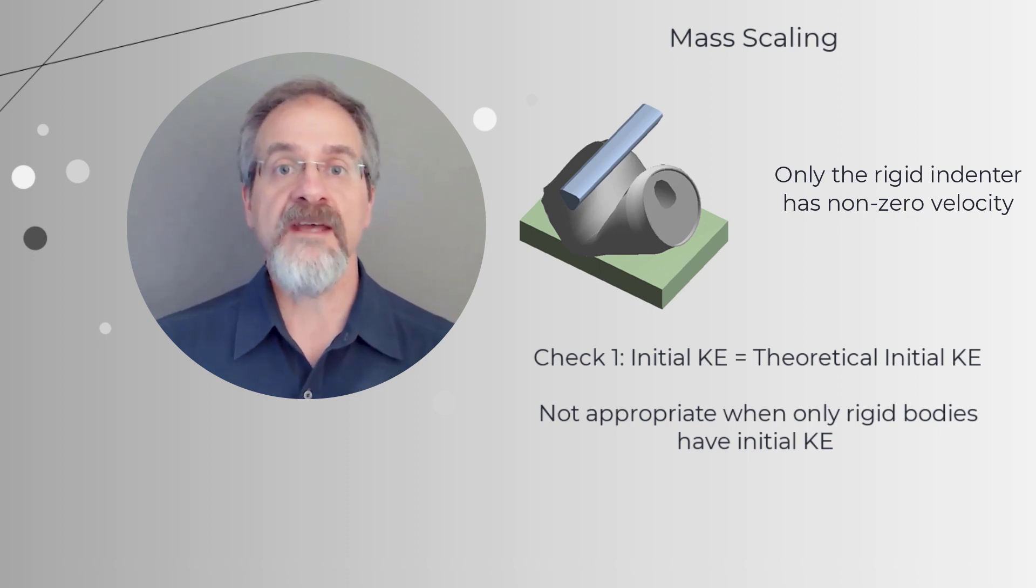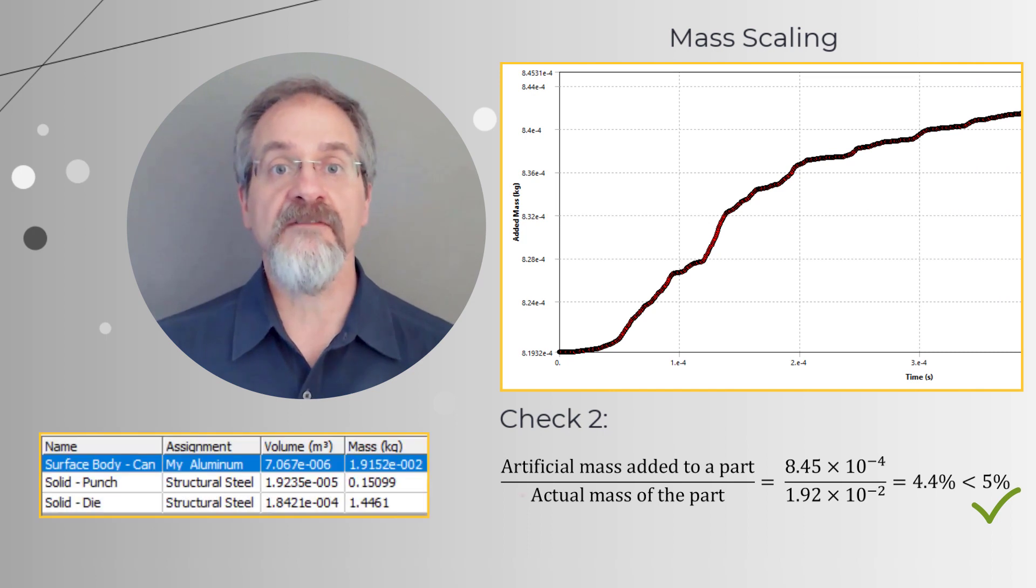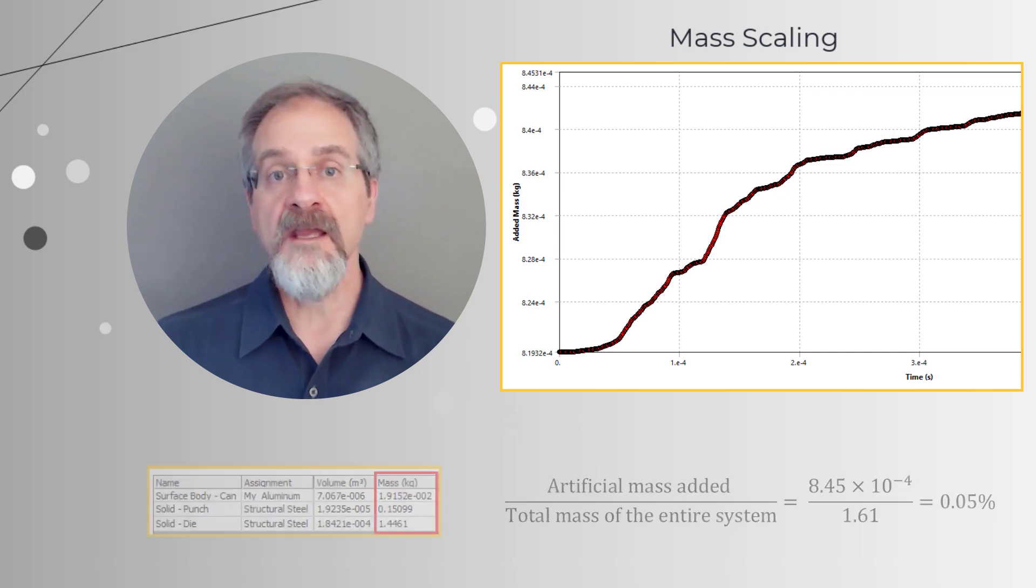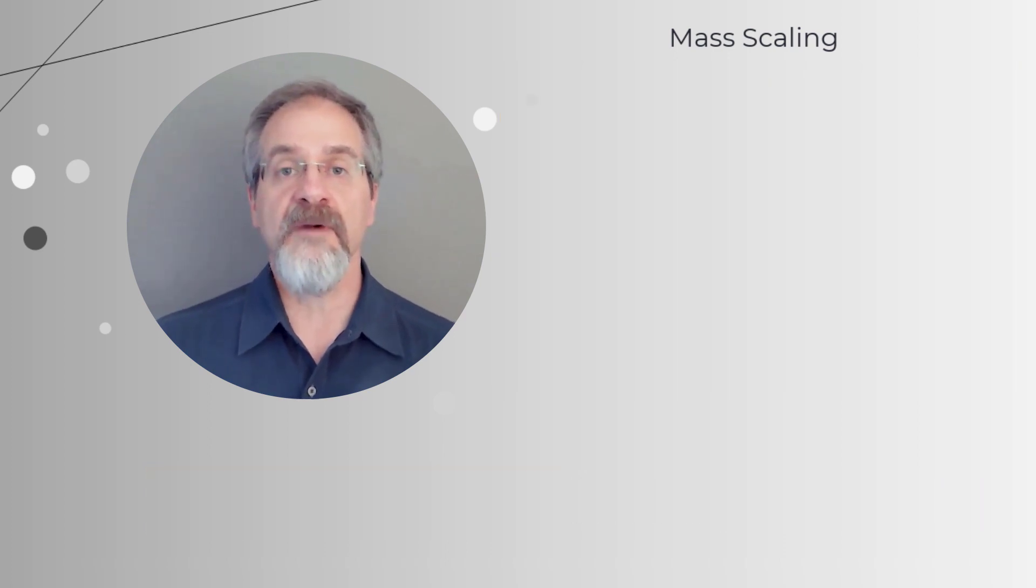Next, we check the mass added for the can. We see that it is less than 5% of the actual mass of the can. Make sure you compare the added mass to the mass of the can, and not to the mass of the entire system.